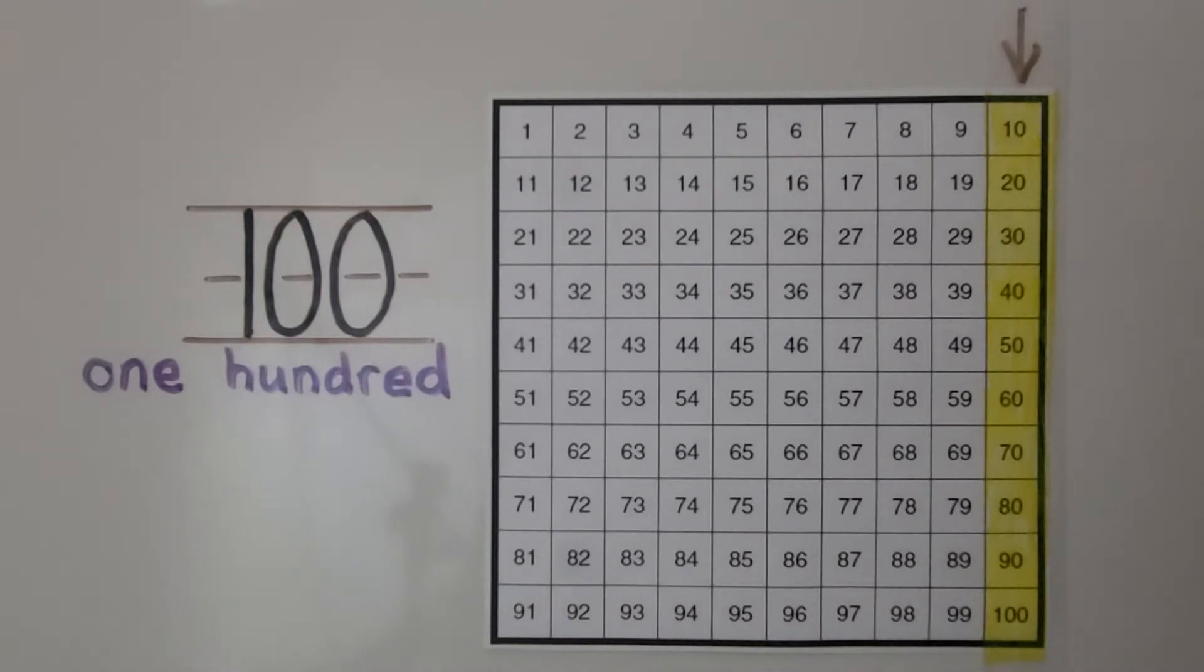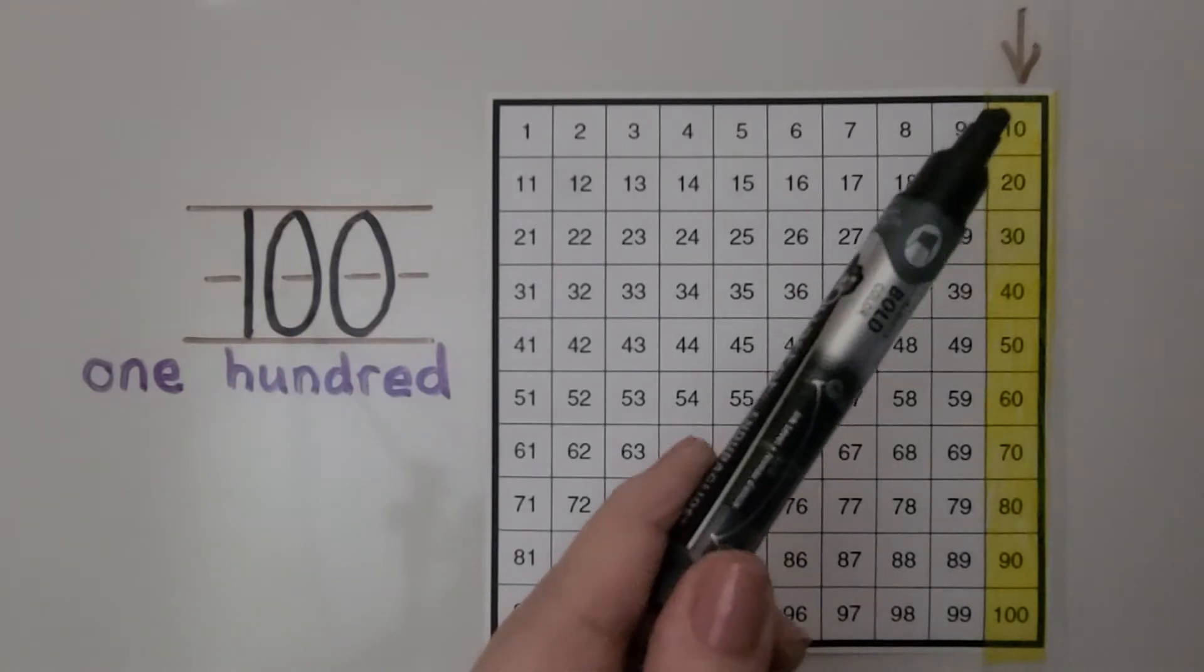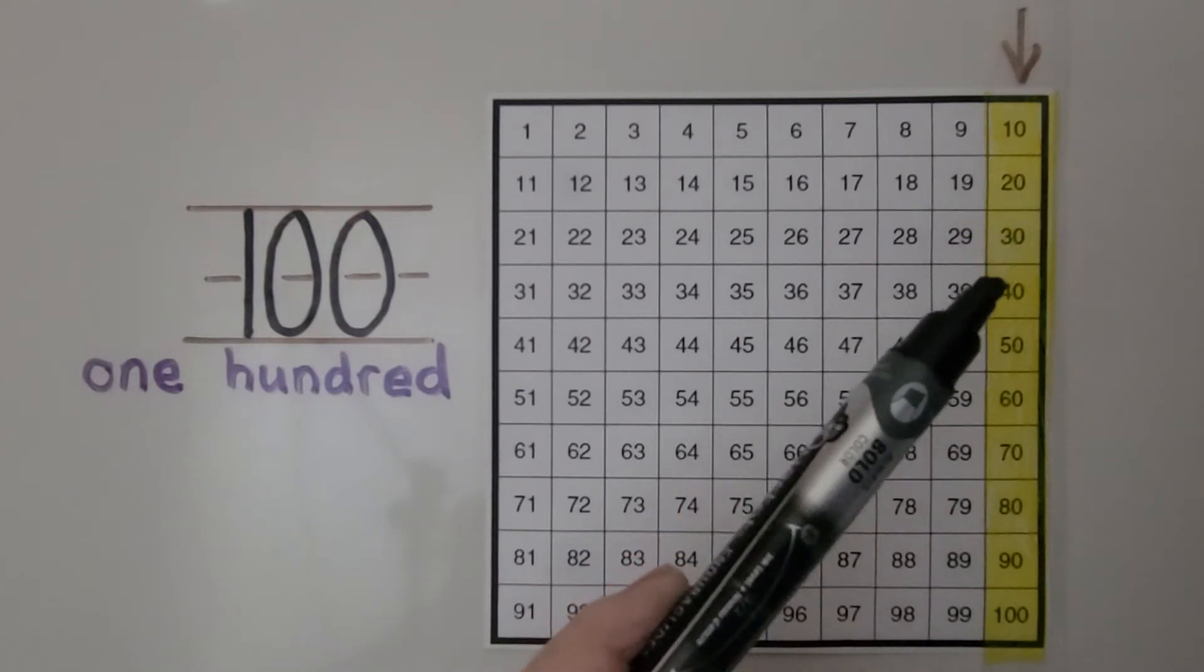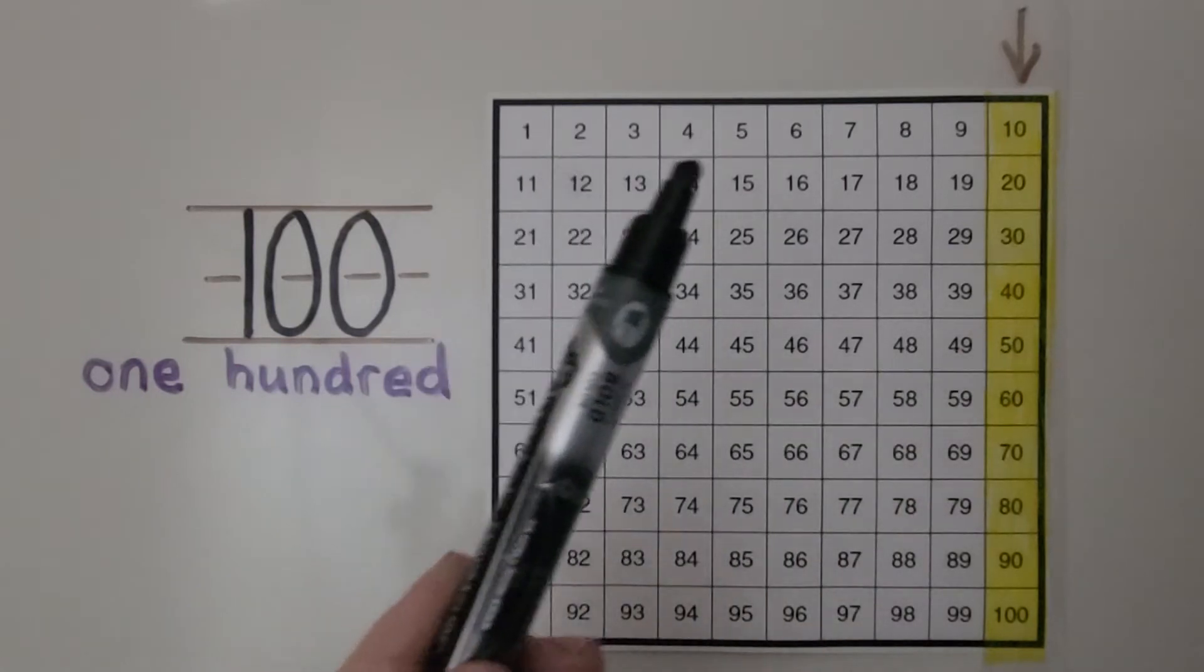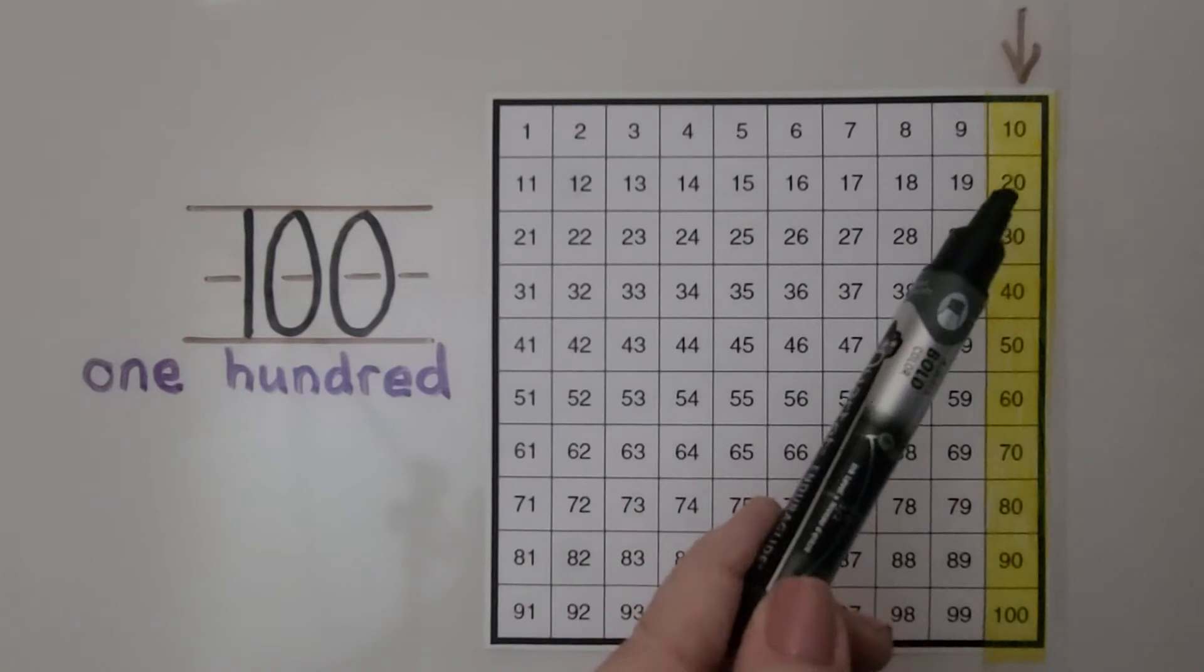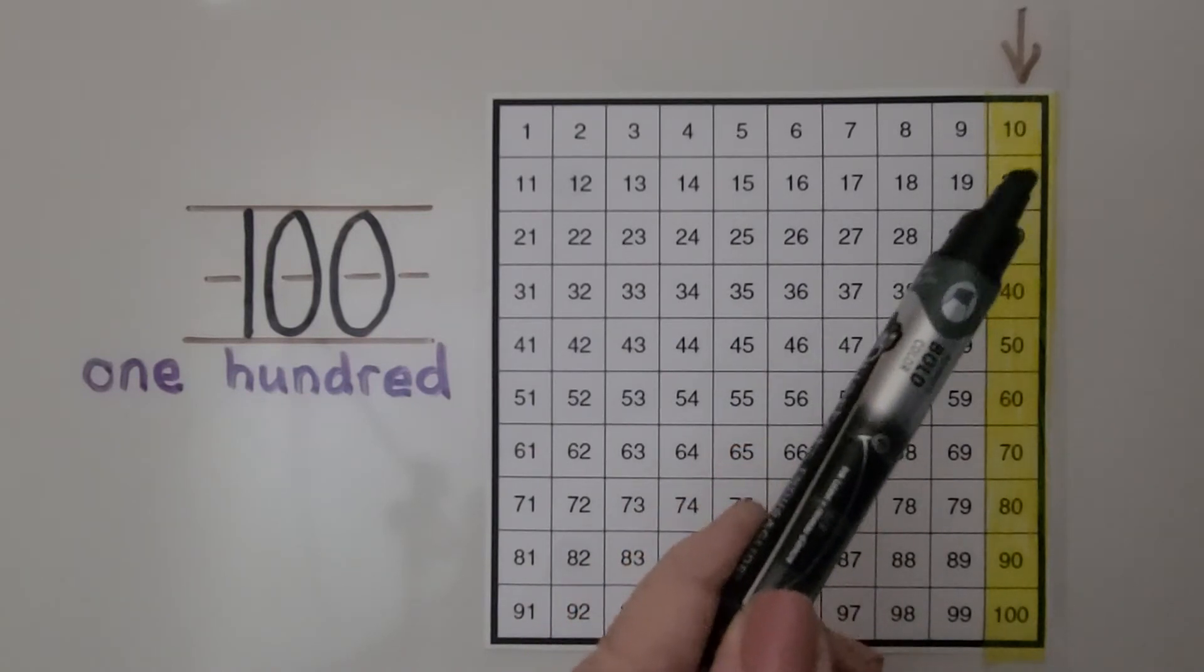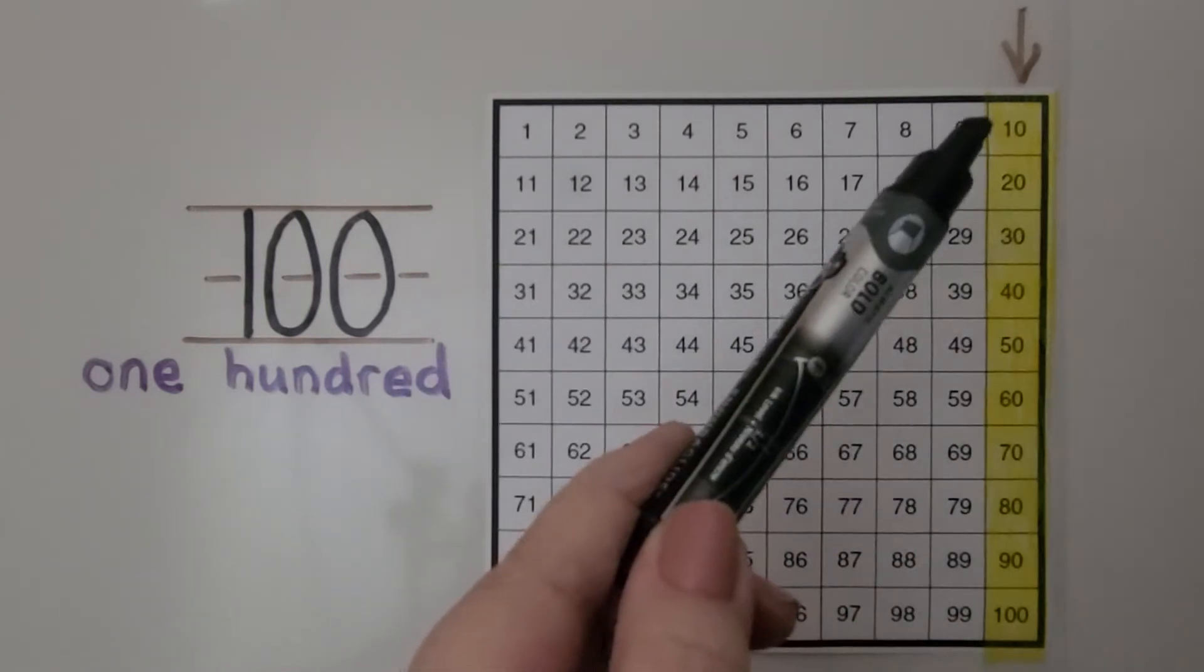We say the numbers going down the column go up by 10 more. So here we have 10. Ten more than 10 would be 20, and 10 more would be 30, and 10 more would be 40, and 10 more would be 50. There are 10 numbers in this row. There are 10 numbers in this row. So when we go from this 10 to this 20, it is 10 more.